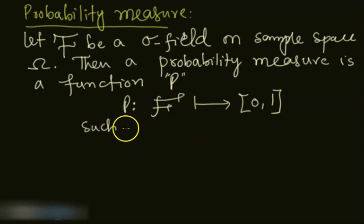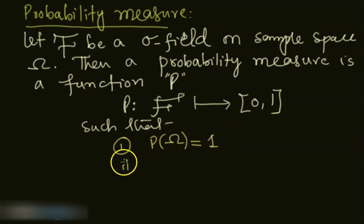Such that this P has two nice properties. Number one: if you are computing the value of sample space under this probability, it's one. So P(Ω) = 1, meaning probability of everything happening is 100 percent.